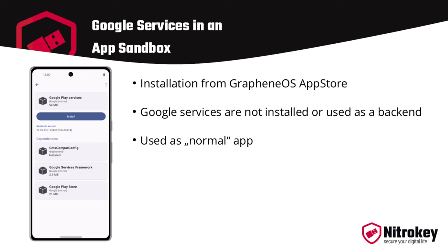Possible configurations: GrapheneOS can easily be extended as desired despite the puristic default state. It is possible to install applications and services from the Android universe, remove restrictions, and configure the device individually. A possible setup would be three user profiles: Owner, Work, and Google Services. The Owner profile is intended for everyday private use — messenger for private communication, mail client for private emails, private contacts, photos, and music.